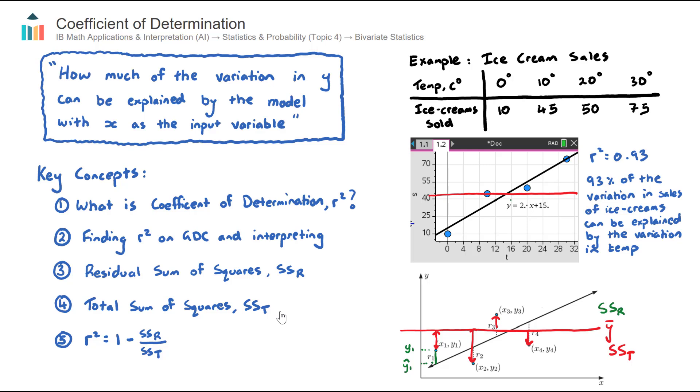So that was an introduction to the coefficient of determination. These types of questions are going to appear in bivariate statistics questions, and often in non-linear bivariate statistics questions. So patterns that follow maybe an exponential model or a logarithmic model or a quadratic model. And we need to assess the fit of the model in comparison to the data. So it's important to understand how to explain this value.